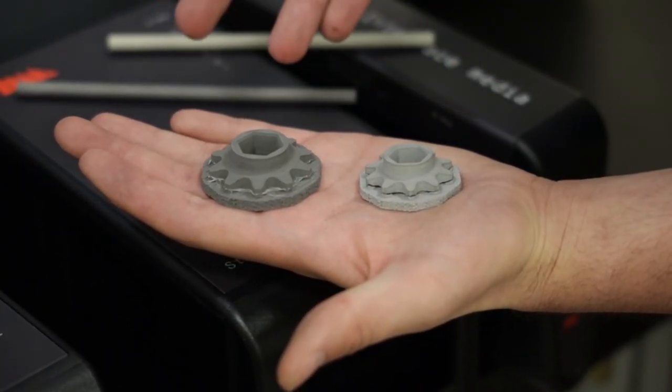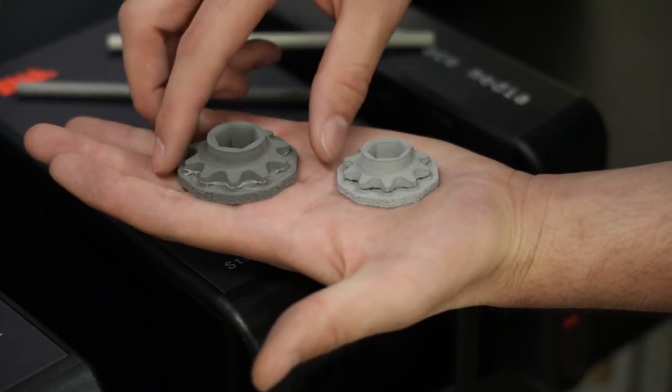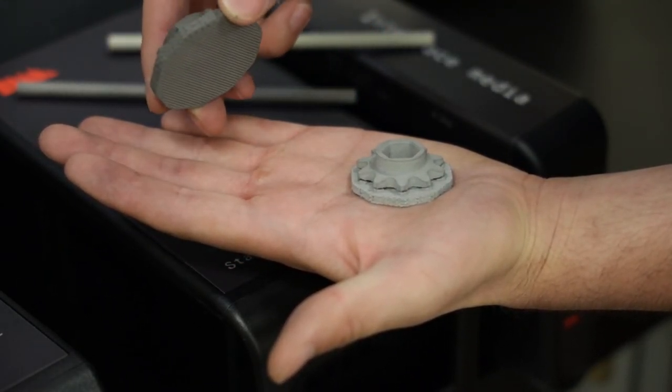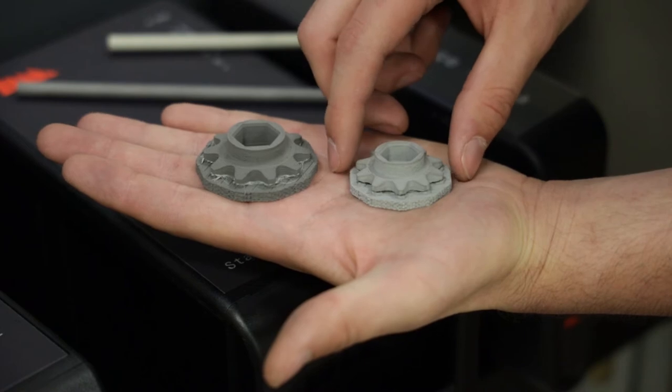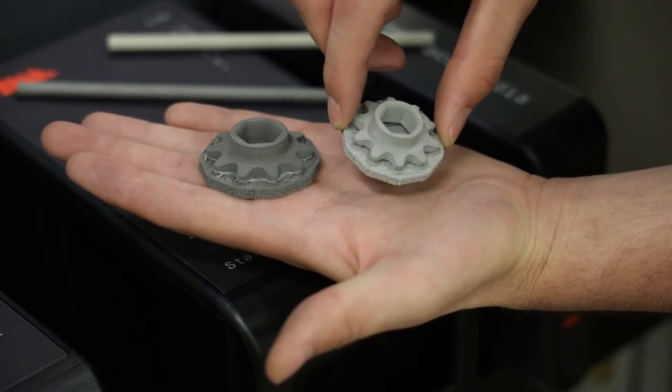So here we're showing the part in two different stages. This is what the part looks like right after it comes off of the printer. And this is what the part looks like when it comes out of the furnace.